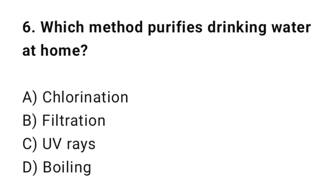Question number six: which method purifies drinking water at home? The right answer is D — boiling. Boiling kills germs and makes water safe.